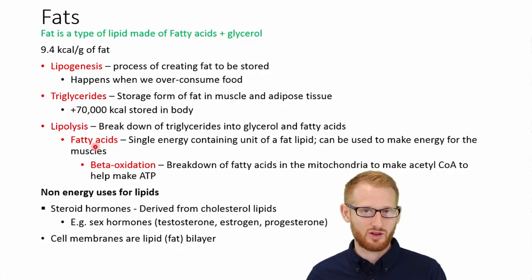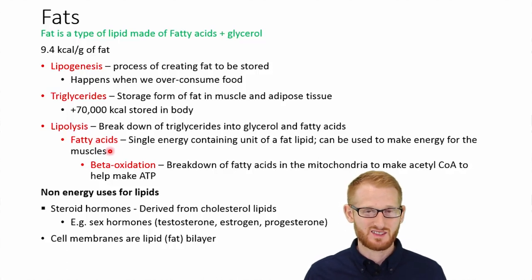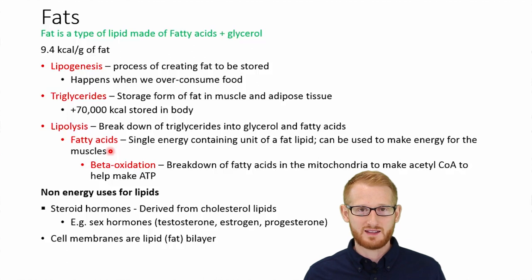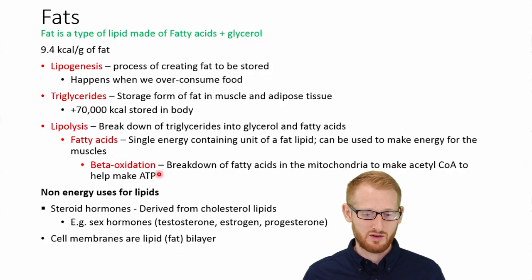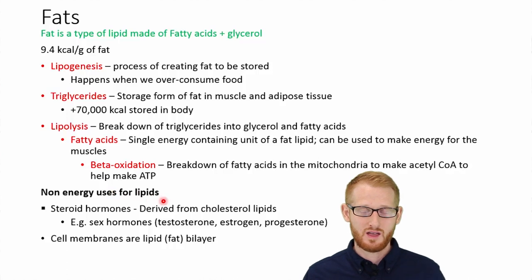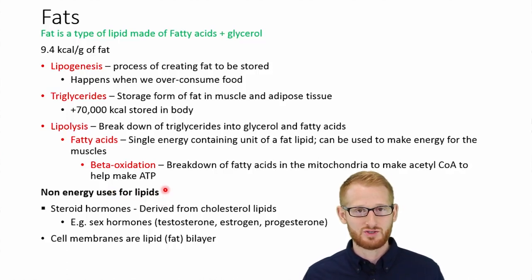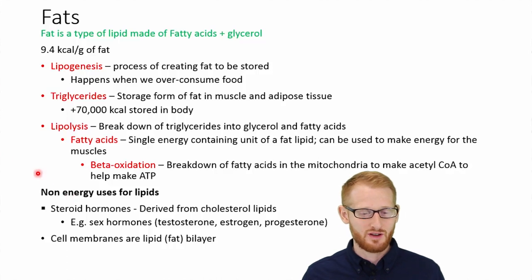We're also liberating glycerols, but we won't focus on that as much. We're liberating fatty acids — essentially the single units of fats that can be used to make energy. This is eventually going to go into a process called beta-oxidation in order to create something called acetyl-CoA, which we'll talk about later, and that is going to turn into ATP.